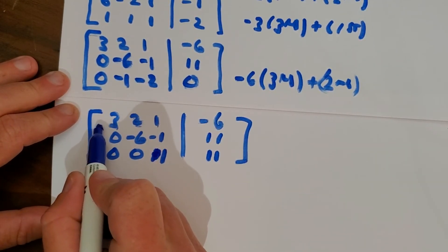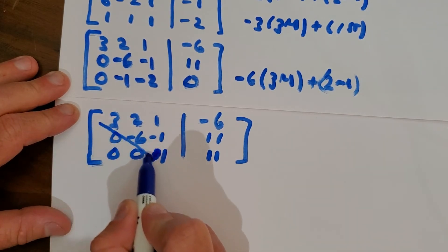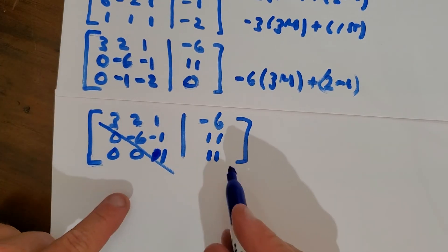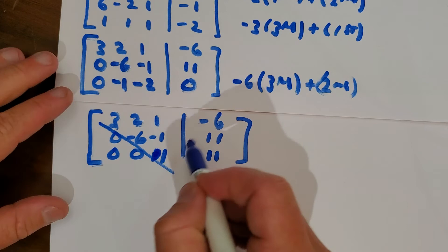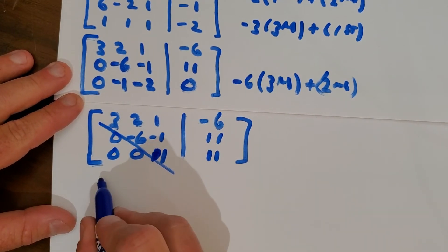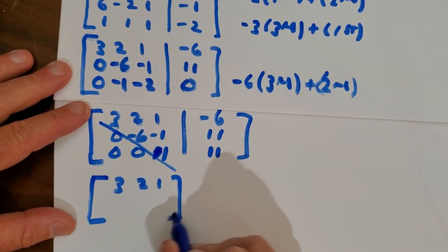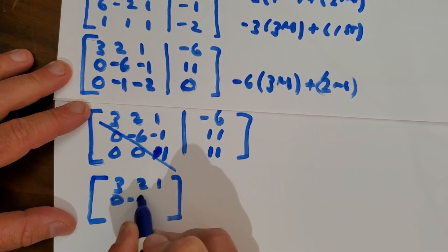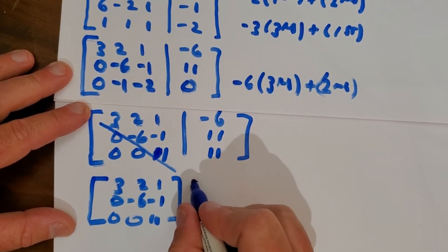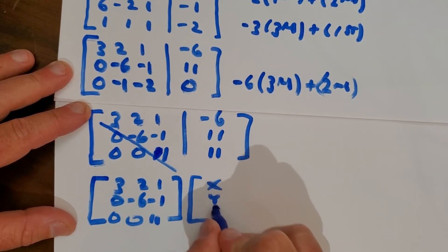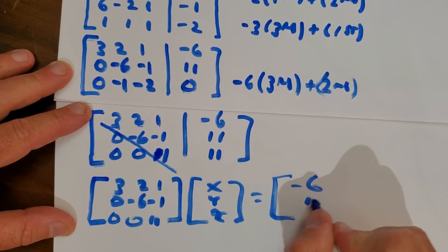This is called reduced row echelon form — if you have all zeros down here. And the reason this works is if you expand back out into what this little bar means, basically what we've learned is this top row is 3, 2, 1; then 0, minus 6, minus 1; then 0, 0, 11. And if you remember, there's an x, y, z here, equals negative six, 11, 11.